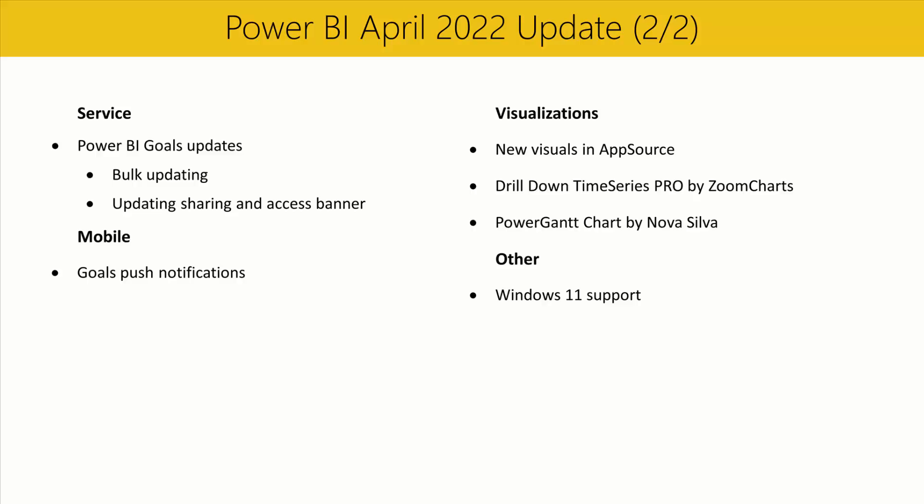In the mobile section, push notifications on the mobile apps help you stay up to date with information requiring your immediate attention. This month, we've added two new types of goals-related push notifications. The first is a notification for when you've been assigned a goal, ensuring you never miss when you've become a goal owner. The second is notifications for mentions — when you're mentioned in a note attached to a new or existing check-in, you'll receive a notification on your mobile device and can reply directly from within the app. Tapping the notification will take you directly into the relevant goals details pane.